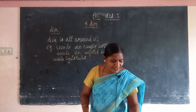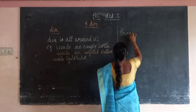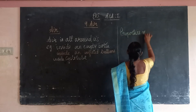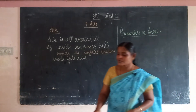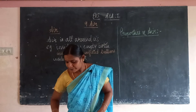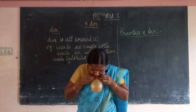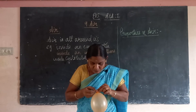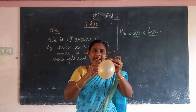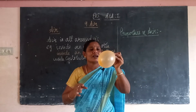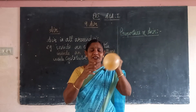Next, we see the properties of air. What are the properties of air? First, we take this balloon. Inside the balloon, air is there. It has no color. Air has no color.